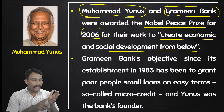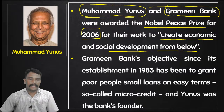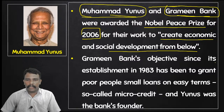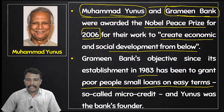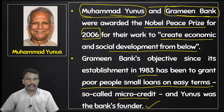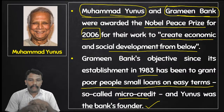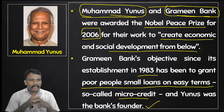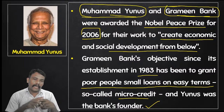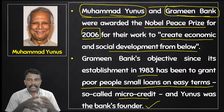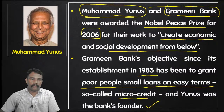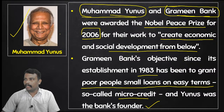Grameen Bank's objective since its establishment in 1983 has been to grant poor people small loans on easy terms — so-called microcredit — and Yunus was the bank's founder. He started giving loans to poor people. If you know the strategy of banks: if you do not have any monthly income, they are not going to give you any kind of loans. But Muhammad Yunus started that in Bangladesh, and it is still in practice. So you can understand he is a great person and we are going to talk about this person.